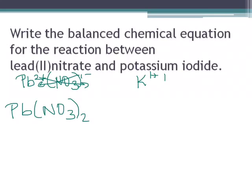Potassium iodide: K 1 plus, I 1 minus, so you get KI. That's going to make potassium nitrate, KNO3, and lead 2 iodide, PbI2.